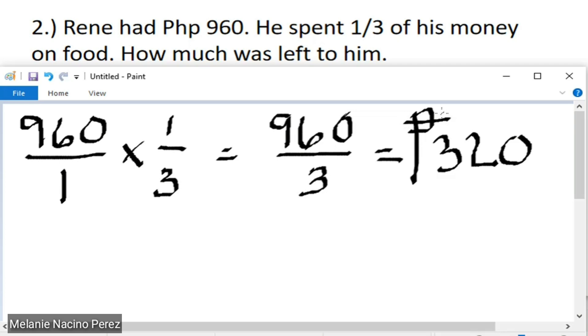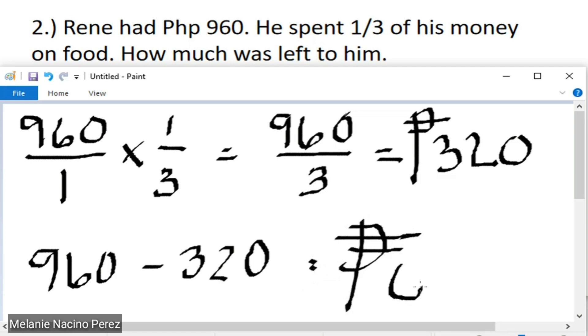So, how much was left to him? All we need to do is subtract. So, 960 pesos, Rene's total money, minus 320, which is what he spent, is equivalent to 640 pesos. So, 640 is the remaining money for Rene.